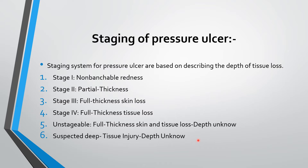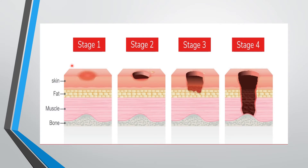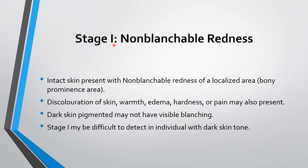In stage one there is redness on the epidermis of the skin. In stage two the skin is lost up to the dermis. In stage three there is loss of tissue up to the subcutaneous layer. In stage four tissue is lost down to the bone. Stage one is non-blanchable redness.